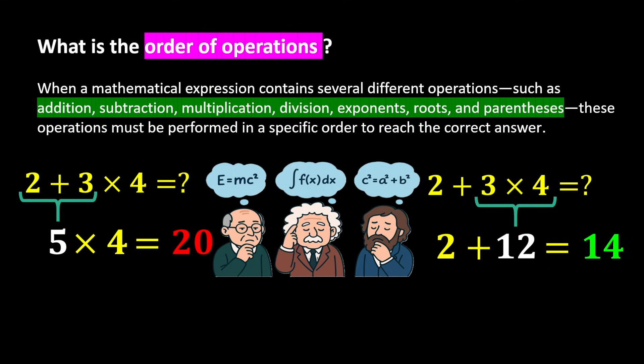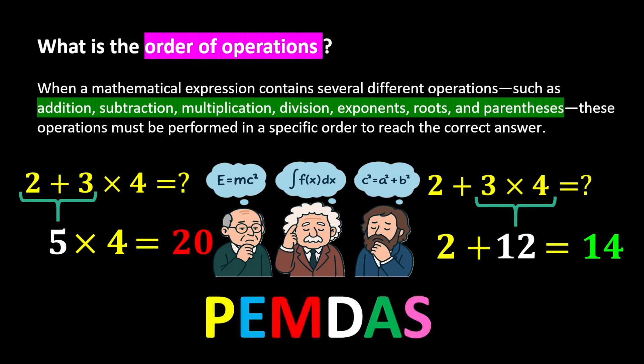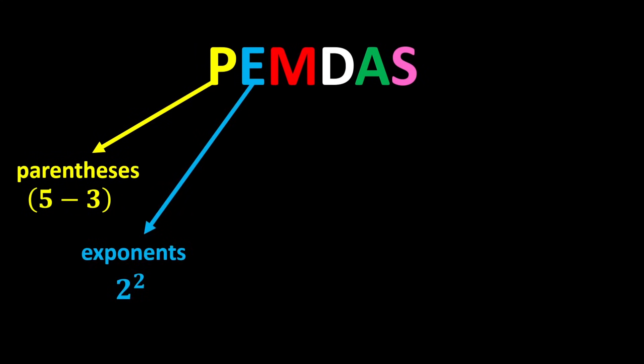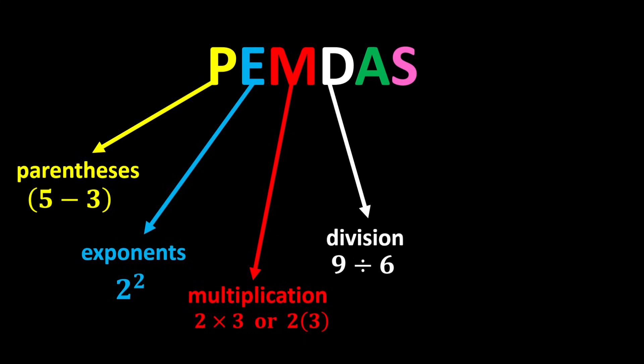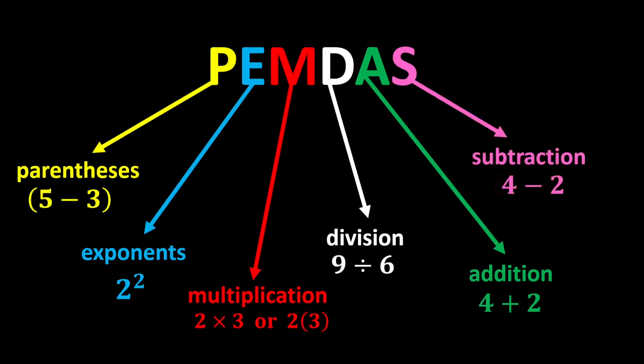which is known by the short abbreviation PEMDAS, each letter in the word PEMDAS represents a specific step. P stands for parentheses. E stands for exponents. M stands for multiplication. D stands for division. A stands for addition. And S stands for subtraction.